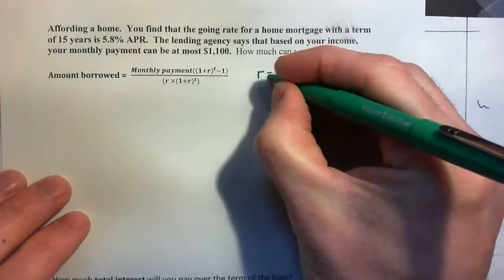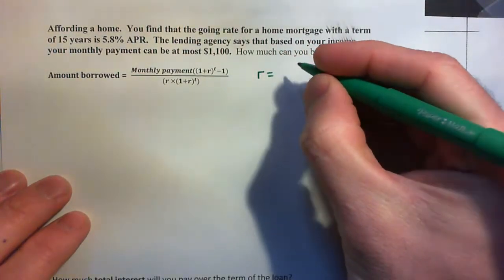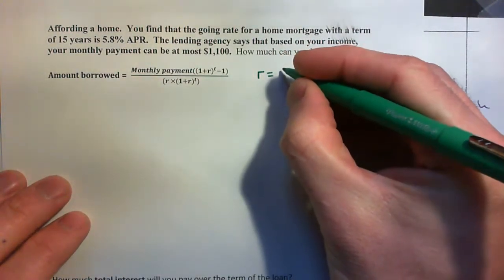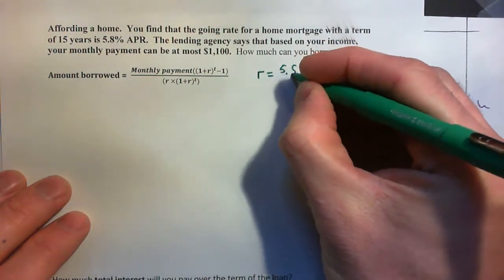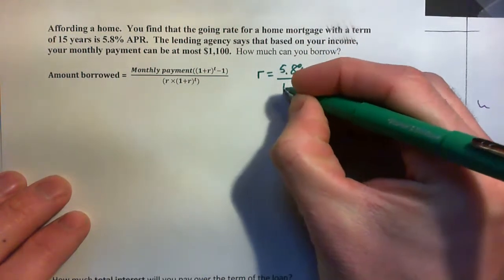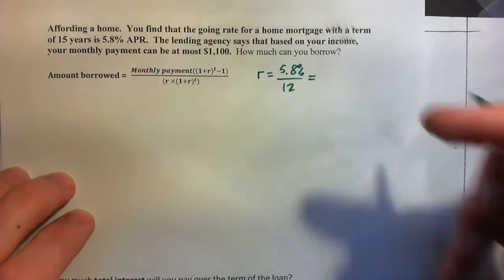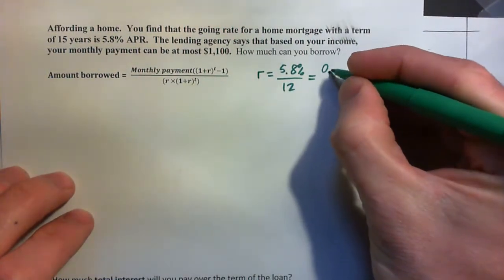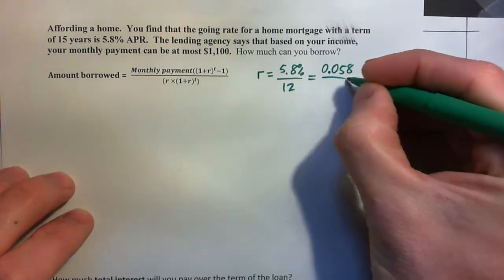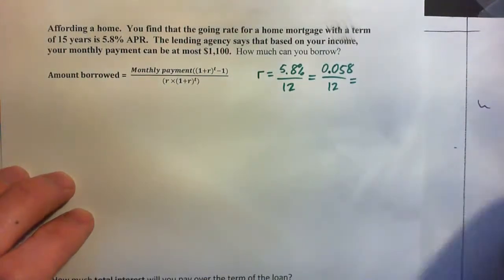So R is the 5.8% over 12. That's 0.058 over 12 and let's see what that comes out to be.